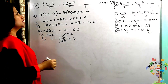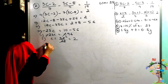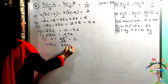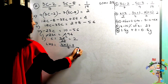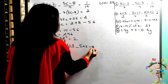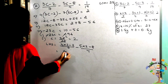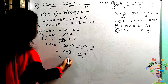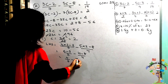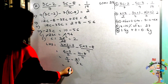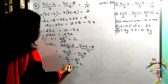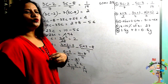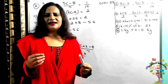Let us verify: c = 2. Left hand side: (3c − 2)/7 − (5c − 8)/4 = (6 − 2)/7 − (10 − 8)/4 = 4/7 − 2/4 = 4/7 − 1/2. LCM is 14: (8 − 7)/14 = 1/14. Right hand side is 1/14. Left hand side equals right hand side — verified.